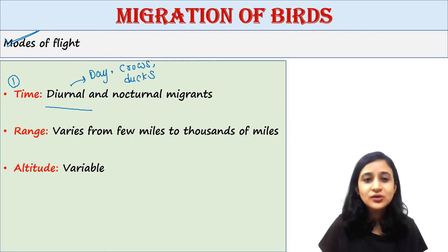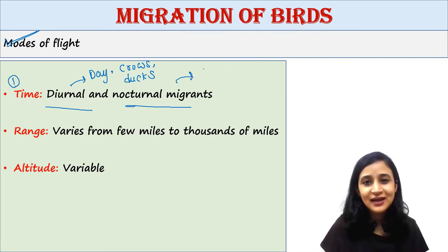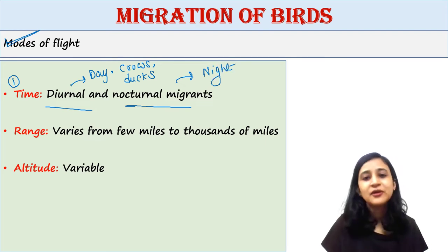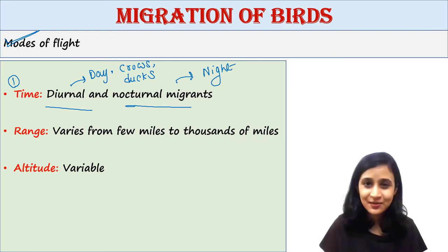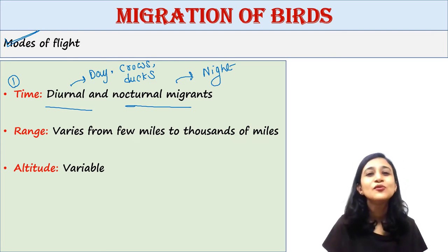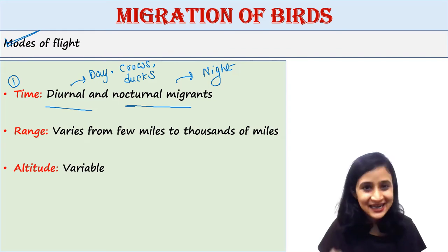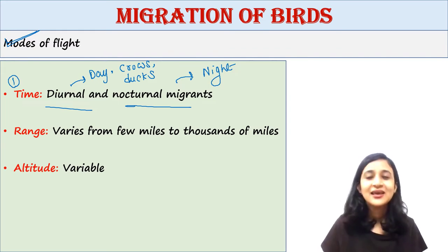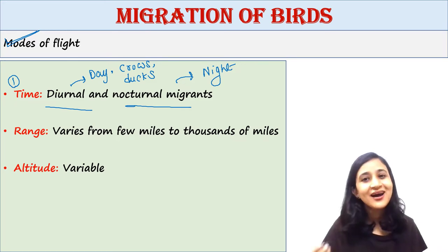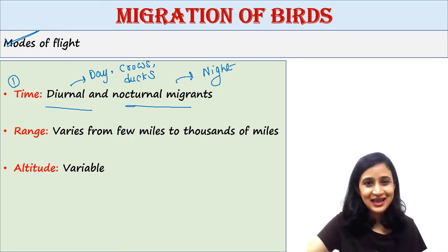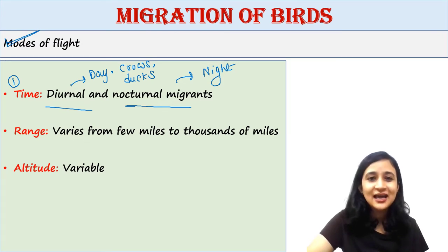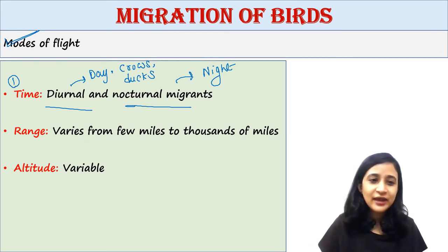The next mode is nocturnal migrants. They prefer to fly at night to escape from their enemies, because it is easier to move at night when their enemies are not active. By flying at night, they arrive at their destination by day, then take rest, procure food, and start flying again at night.